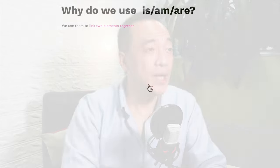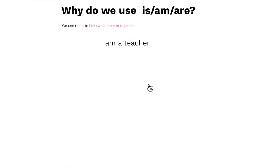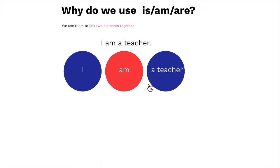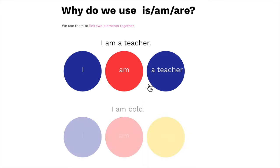And why do we use IS/AM/ARE? We use them to link two elements together. For example: I'm a teacher — the linking verb AM is linking 'I' and 'a teacher' together. Or: I'm cold — the word AM is linking 'I' and 'cold' together.